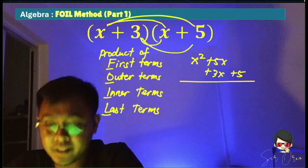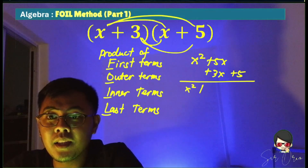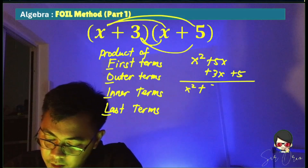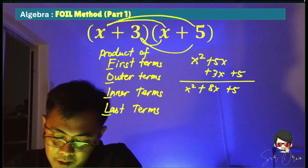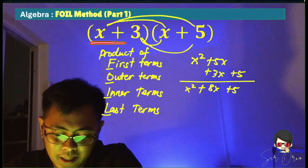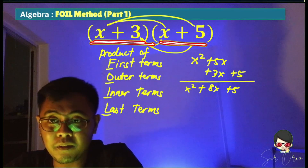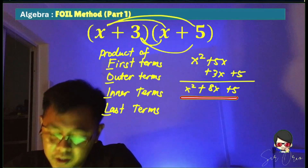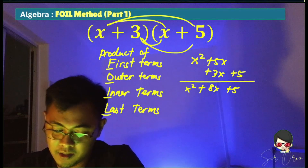Combine similar terms. So we have x squared plus 8x plus 5, and the product of these two binomials, x plus 3 times x plus 5, is equal to x squared plus 8x plus 15.